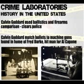Calvin Goddard used ballistics and firearms comparison to clear the police. The police raided the home of a hitman for Al Capone and found two machine guns, which they gave to Goddard to take to his ballistics lab. He test-fired them and proved they were the weapons used in the massacre.